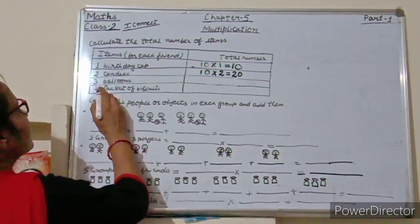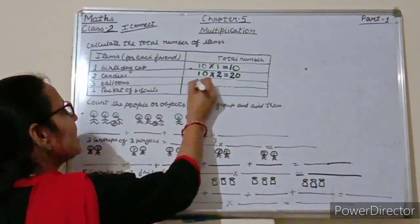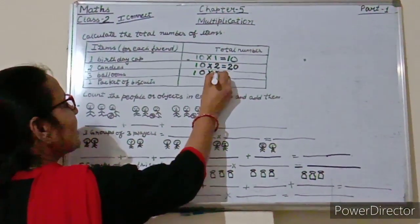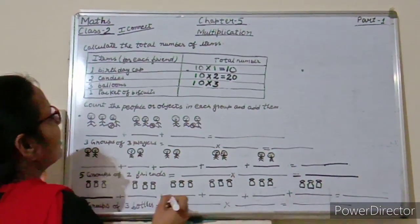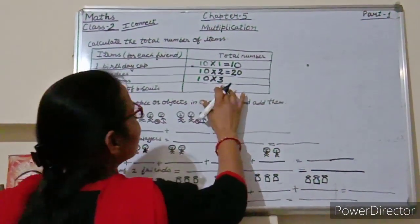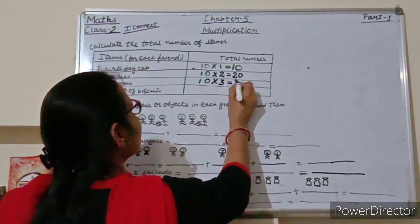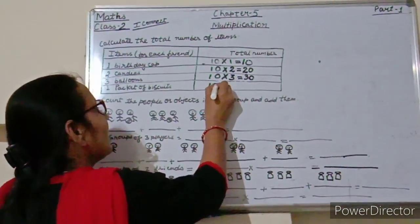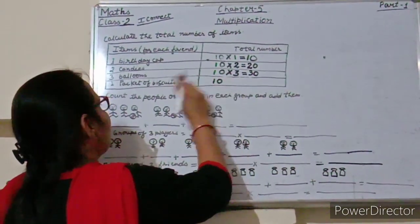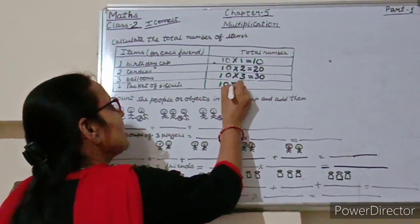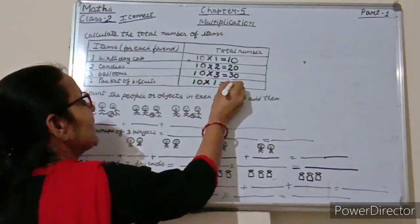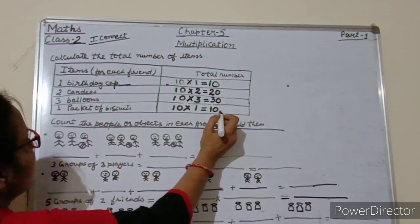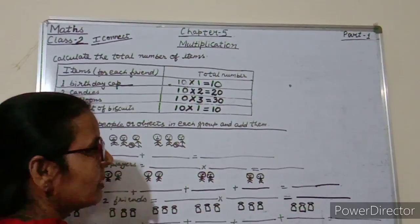3 balloons for each friend — 10 friends and each friend gets 3 balloons, so 10 into 3 is equal to 30. And here 1 packet of biscuits, so 10 friends and 1 packet of biscuits for each friend: 10 into 1 is equal to 10. So 10 caps, 20 candies, 30 balloons, and 10 packets of biscuits.